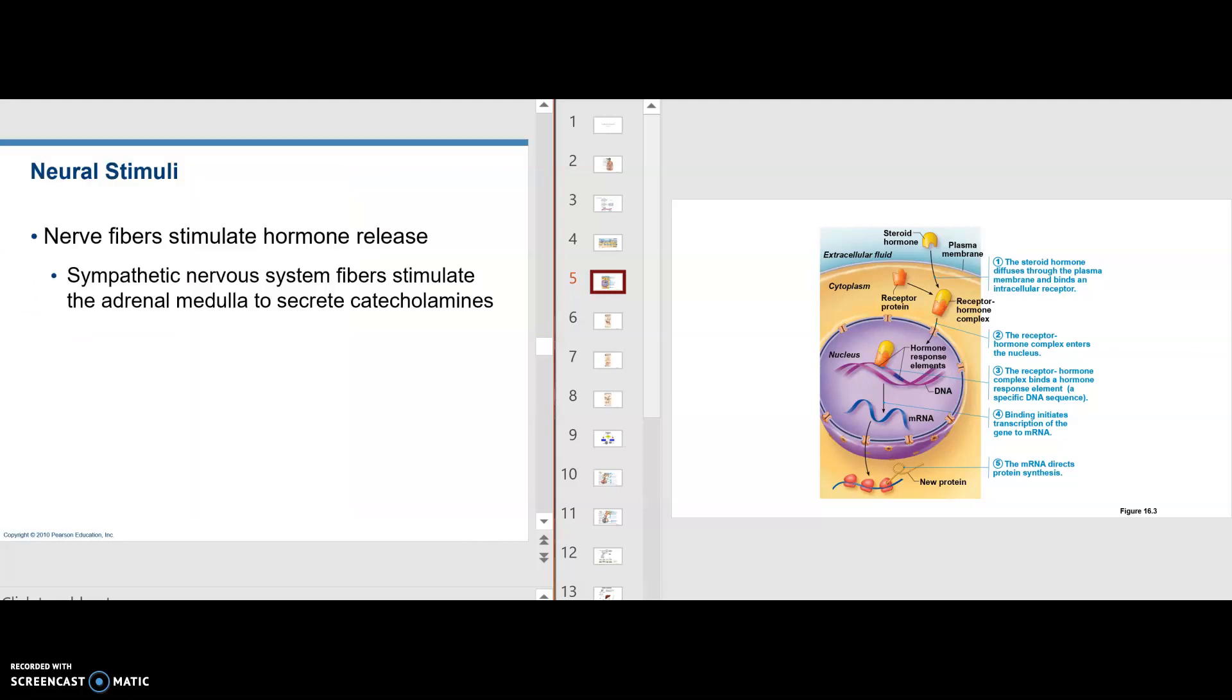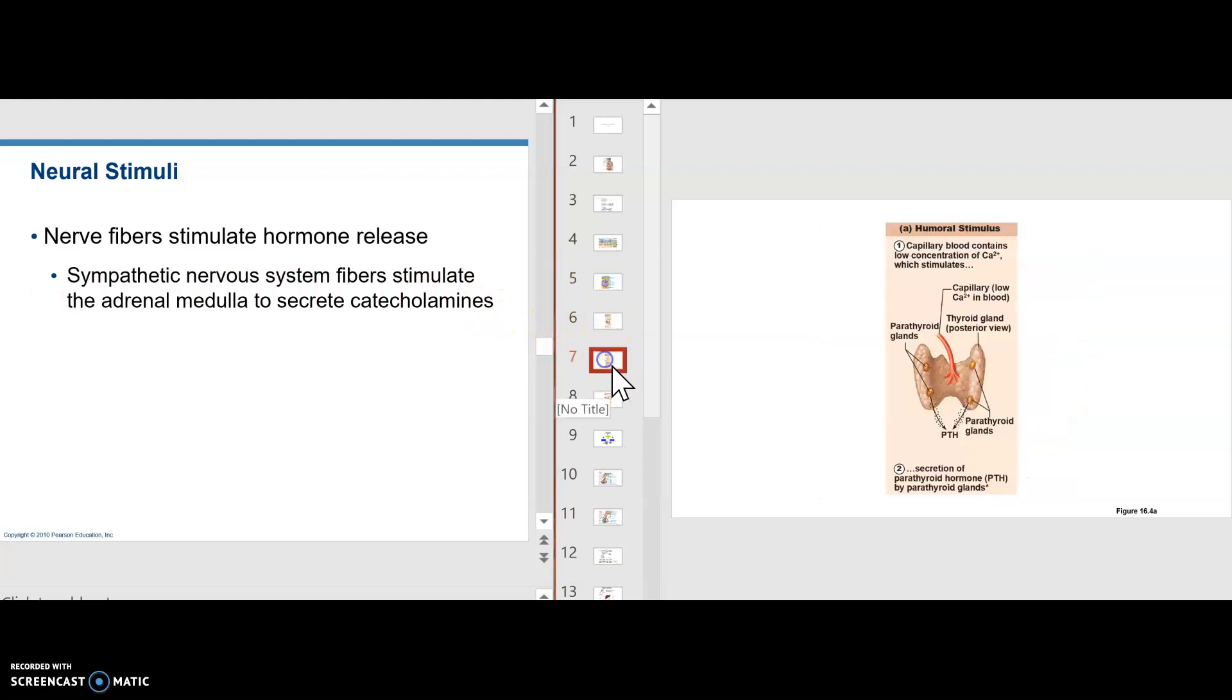Neural stimuli. Nerves can come in. For example, the adrenal medulla here makes epinephrine. It's a catecholamine because it has a catechol ring, something to study in biochemistry and P1. But the adrenal medulla makes epinephrine. Epinephrine is a hormone.